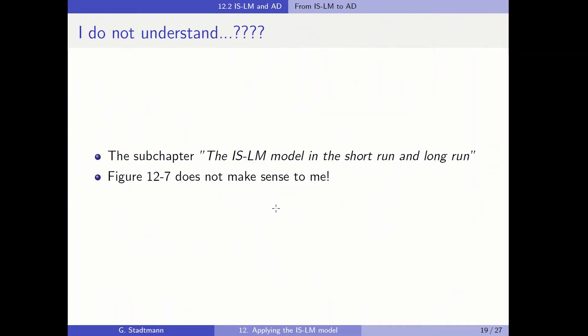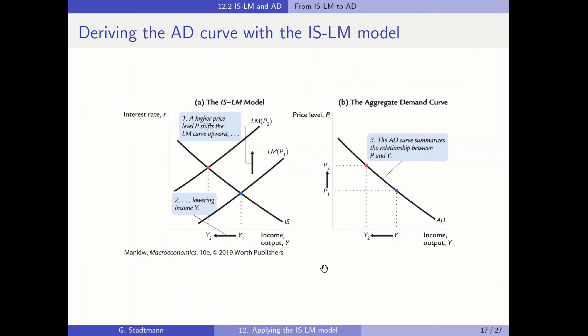Let's start here on slide number 17. In the left part, we have the ISLM model. In the beginning, we are in scenario 1 — the blue scenario — where the price level is at P1 and the GDP level is at Y1. Therefore, we can already insert one point in the right part of the diagram: when the price level is at P1, goods demand is at Y1.